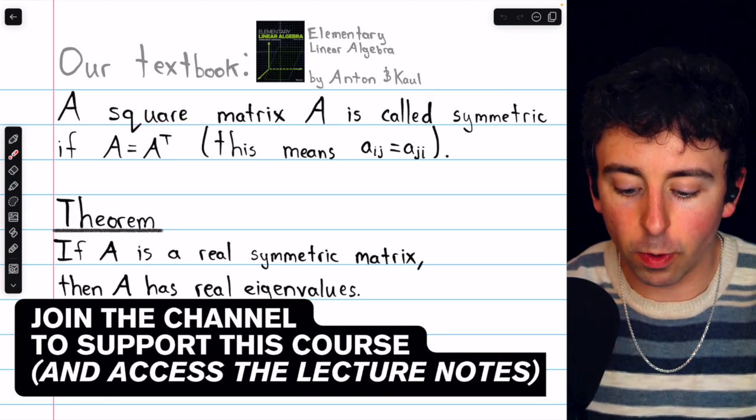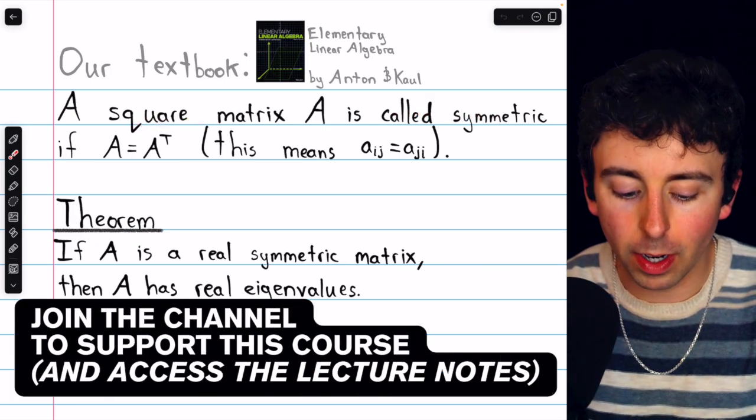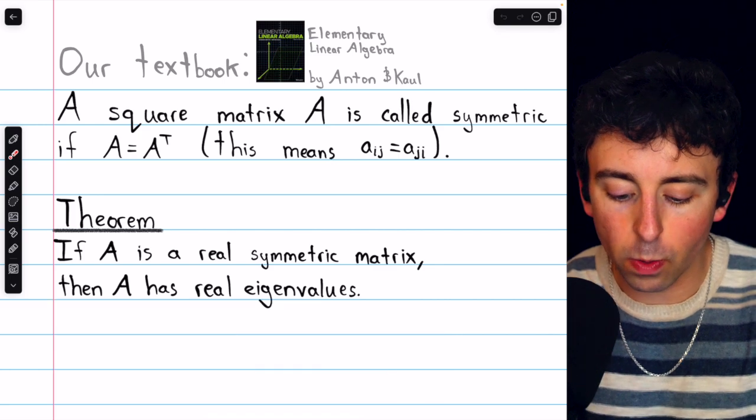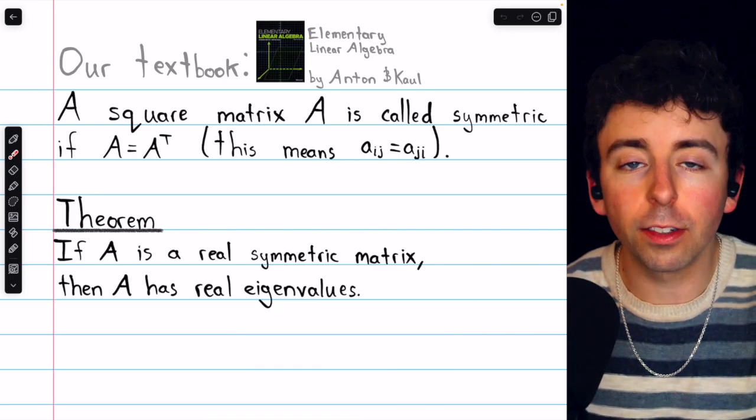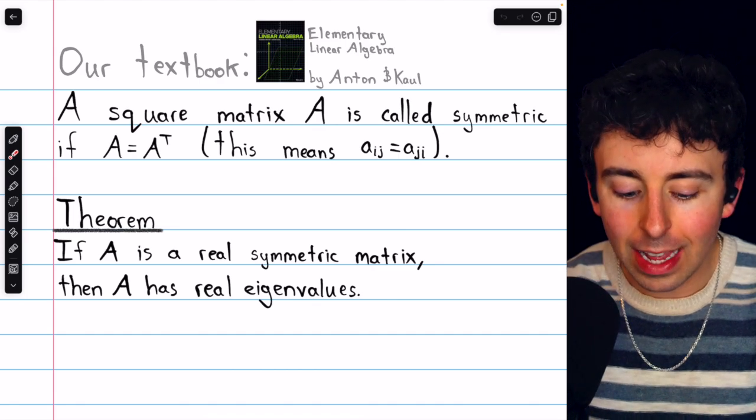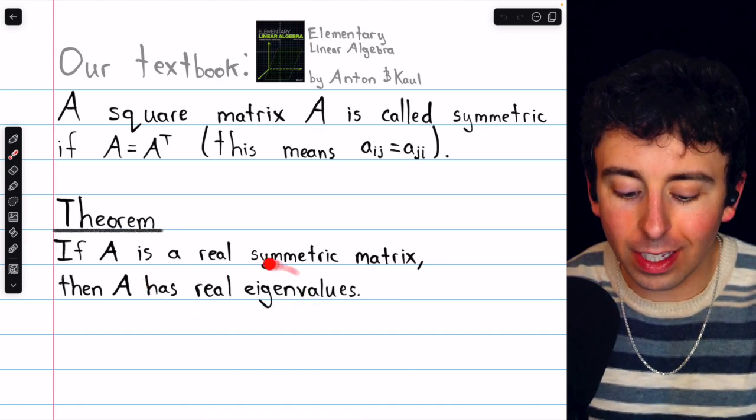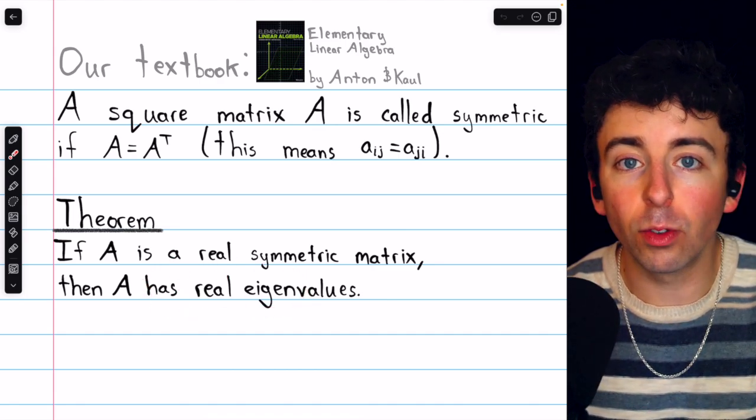Recall that a square matrix is said to be symmetric if it's equal to its own transpose. An interesting property that real symmetric matrices have is that their eigenvalues are guaranteed to be real as well.